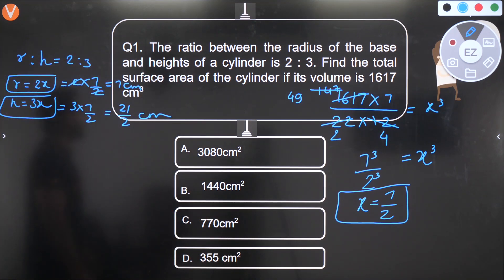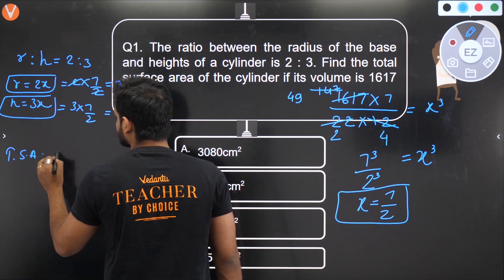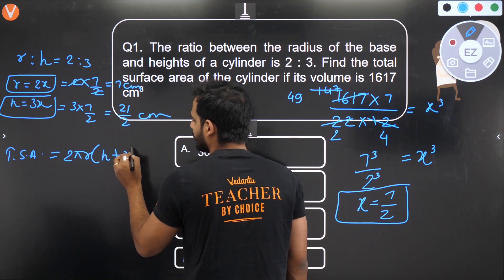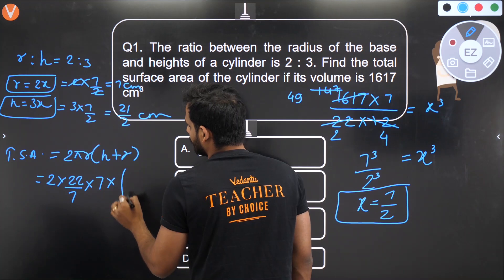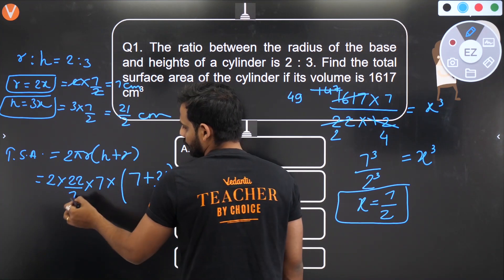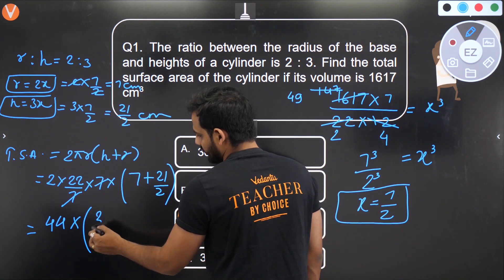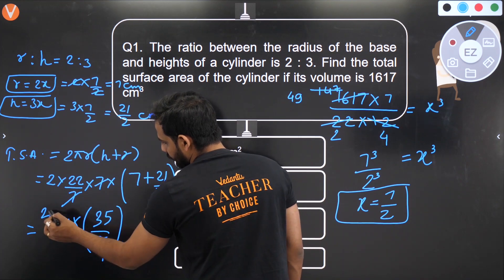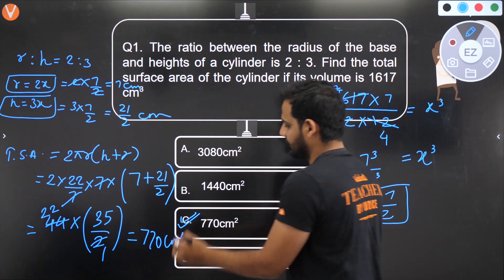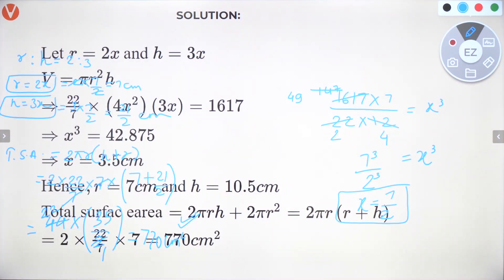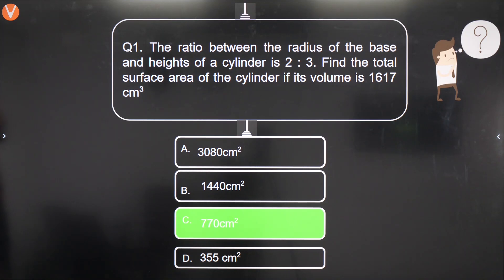Now I have my radius and height. They want the total surface area. TSA = 2πr(h + r) = 2 × (22/7) × 7 × (21/2 + 7). The 7s cancel, giving 44 × (14/2 + 21/2) = 44 × 35/2 = 44 × 17.5 = 770 cm². So the correct answer is option C: 770 cm².